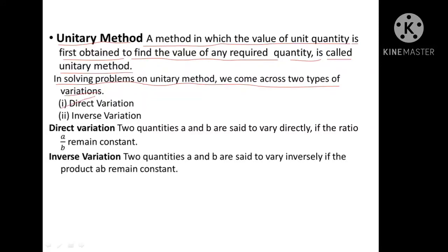The first one is direct variation, and the second one is inverse variation. Two quantities A and B are said to vary directly if the ratio A upon B remains constant. For inverse variation, two quantities A and B are said to vary inversely if the product A and B remains constant.